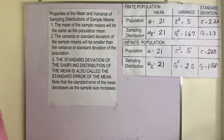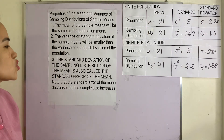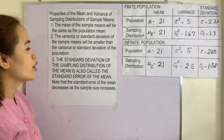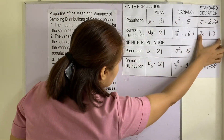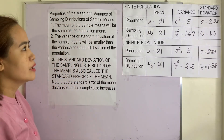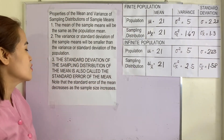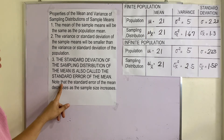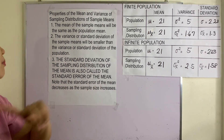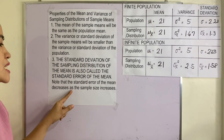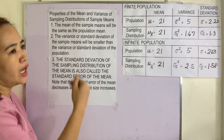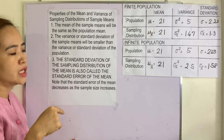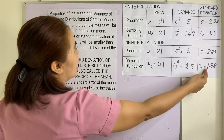Number three: the standard deviation of the sampling distribution of the mean is also called the standard error of the mean. This applies to both finite and infinite population formulas. Note that the standard error of the mean decreases as the sample size increases — so if small n increases, the standard error decreases.